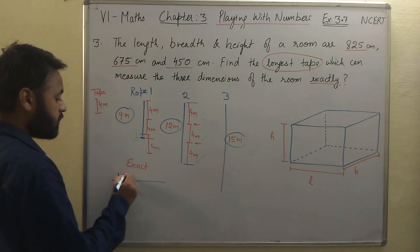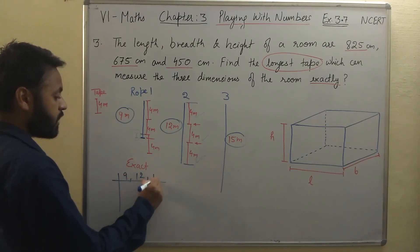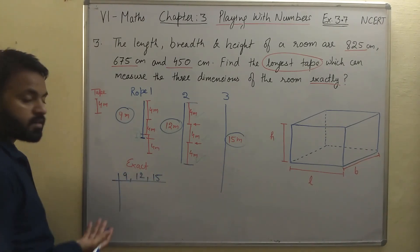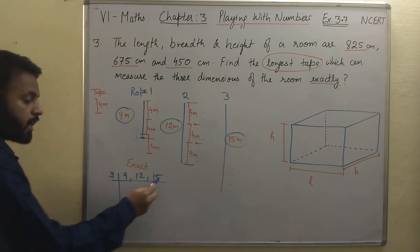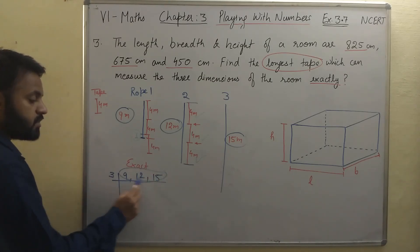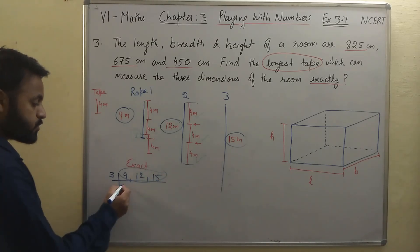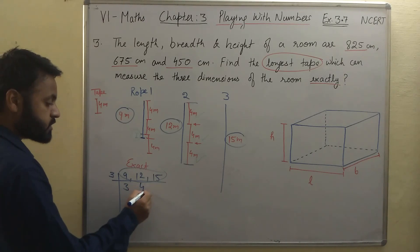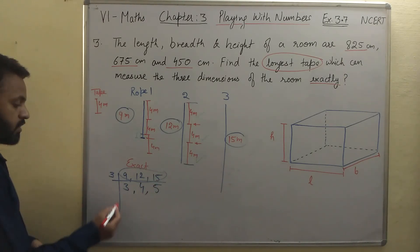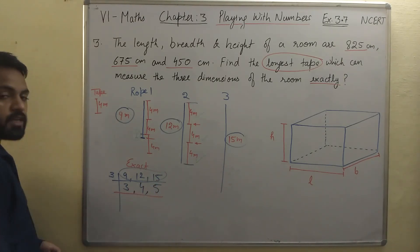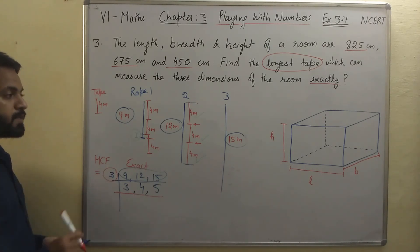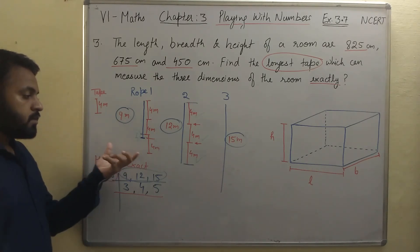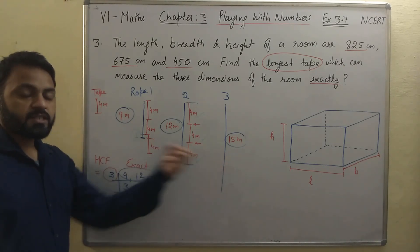We know how to find HCF. For 9, 12, and 15 — which number are all three exactly divisible by? In HCF, we divide all 3 numbers together. These 3 numbers are divisible by 3: 3×3=9, 3×4=12, 3×5=15. We cannot divide these numbers further by the same number, so we stop our calculation here. The HCF is 3. That means using a tape of 3 meters, we can measure all 3 lengths exactly.